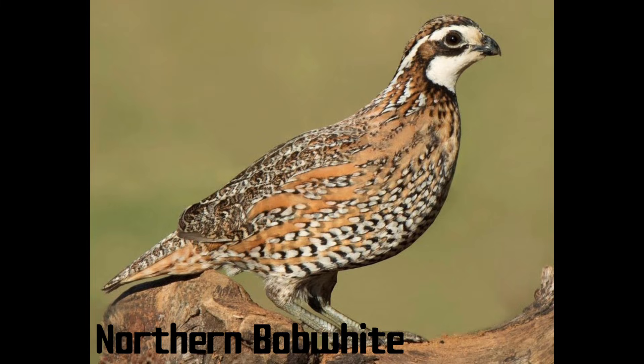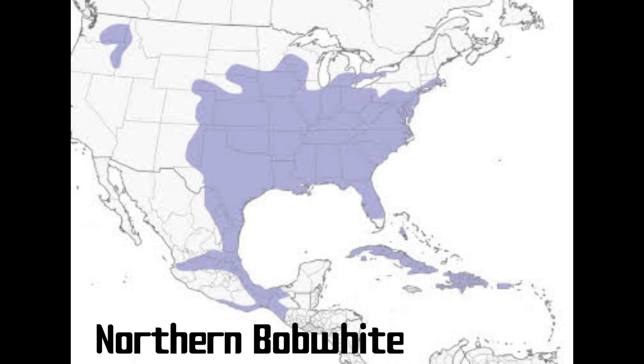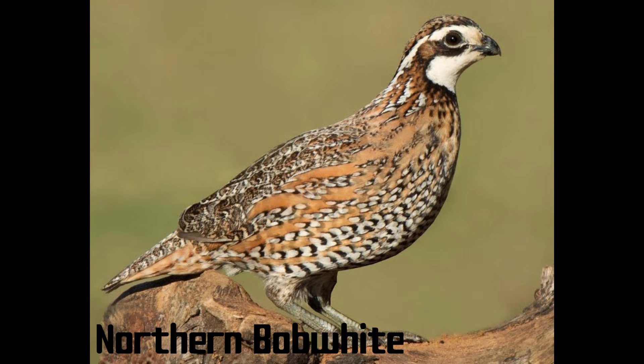The northern bobwhite is found in nearly all of the southeastern U.S., as well as Mexico and the Caribbean islands. Despite their sharp population decline, it's still possible to find northern bobwhite in fields, rangelands, and open forests over much of their range. Their call is one of the easiest to learn of all the bird sounds with just two sharp whistled notes.